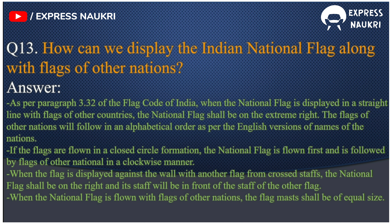Question 13: How can we display the Indian national flag along with flags of other nations? Answer: As per paragraph 3.32 of the Flag Code of India, when the national flag is displayed in a straight line with flags of other countries, the national flag shall be on the extreme right. The flags of other nations follow in alphabetical order as per the English versions of names of the nations. If flags are flown in a closed circle formation, the national flag is flown first and is followed by flags of other nations in a clockwise manner. When the flag is displayed against the wall with another flag from crossed staffs, the national flag shall be on the right and its staff will be in front of the other flag's staff. When the national flag is flown with flags of other nations, the flagpoles must be of equal size.